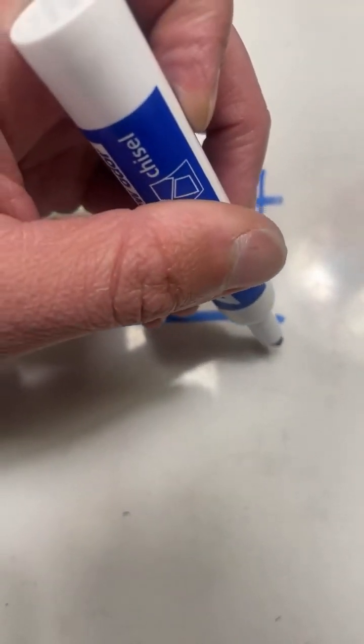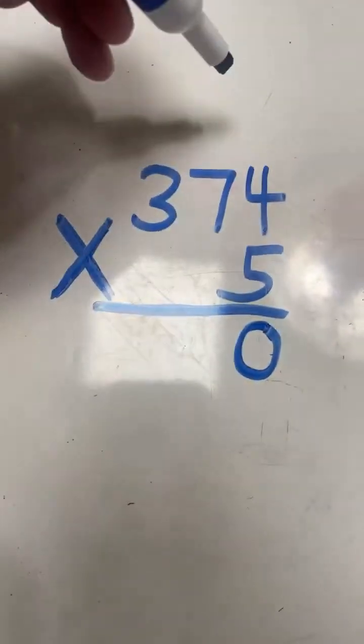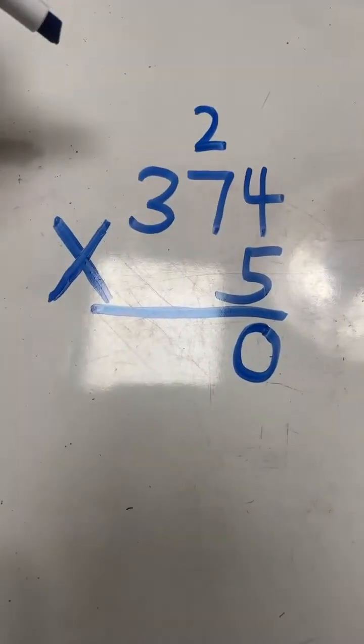Anytime our product is 10 or more we need to regroup. So the 0 in 20 goes in the ones place, the 2 gets carried over to the tens place.